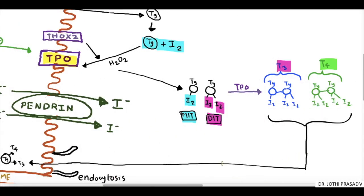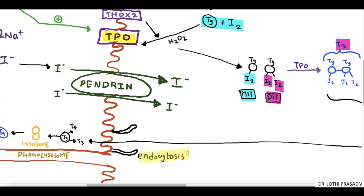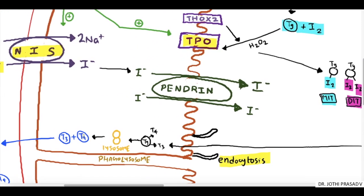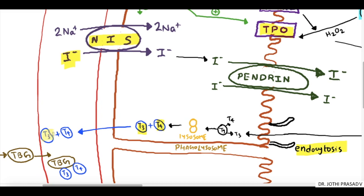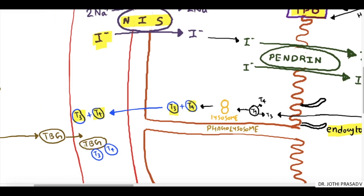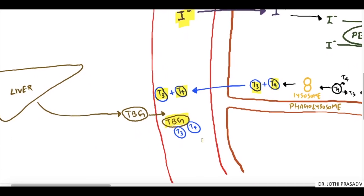These complex proteins are again taken back to the thyroid follicle by a process called endocytosis, where they are broken down to simpler T3 and T4 forms by the enzyme lysosome. This process is the fourth step in thyroid hormone synthesis, that is hydrolysis. This T3 and T4 are again taken back into the circulation, where they are combined with the thyroid binding globulin produced by liver and transferred to the circulation.